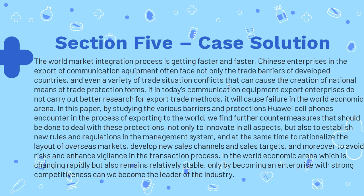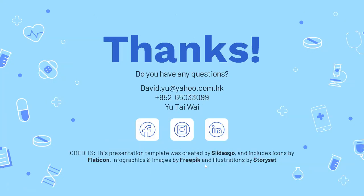In this paper, by studying the various barriers and protections Huawei cell phones encounter in the process of exporting to the world, we find countermeasures that should be done to deal with these protections — not only to innovate in all aspects, but also to establish new rules and regulations in the management system, rationalize the layout of overseas markets, develop new sales channels, and enhance vigilance in the transaction process. In the rapidly changing yet relatively stable world economic arena, only by becoming an enterprise with strong competitiveness can one become the leader of the industry. Thank you for watching; my presentation is finished, and I welcome teacher criticism and correction.